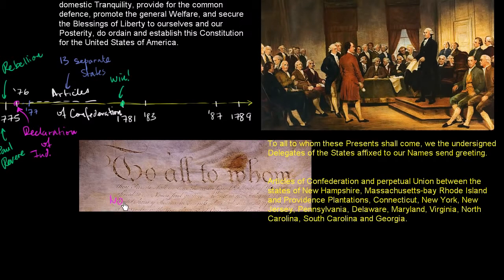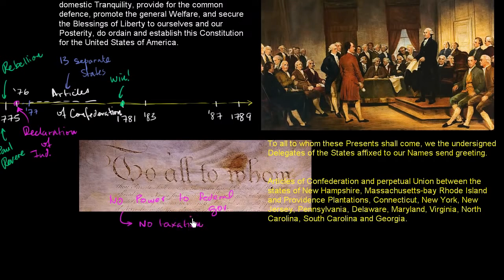It's the delegates of the states who affixed their names to this — the Articles of Confederation and Perpetual Union between these states. One of the main things they fail to do is give the central government any taxation power. It's up to the states to tax. The Congress meeting under the Articles has to beg each state to requisition a little money so it can continue its business. The central government has no federal income tax, not any kind of tax at all. The states can tax however they see fit and then give something to the center.